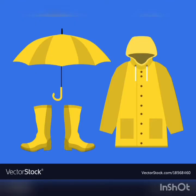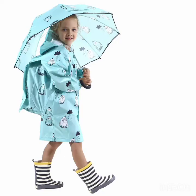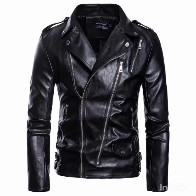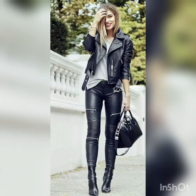In rainy season, we carry an umbrella and wear a raincoat to protect our body from water. There are some clothes made from animal skin, called leather, and we should not wear them because to make such clothes, animals are killed. That's why we should not wear these clothes.